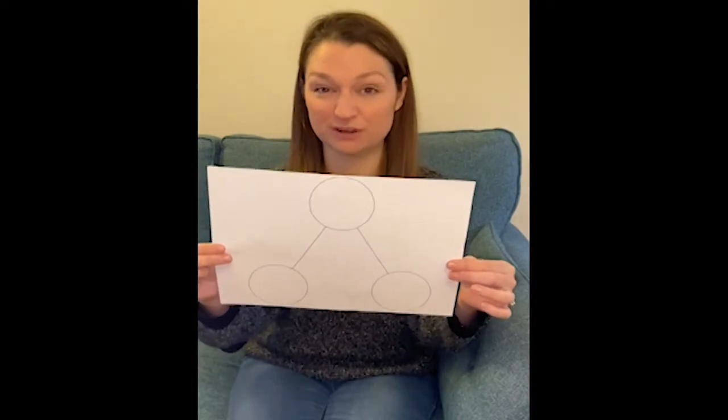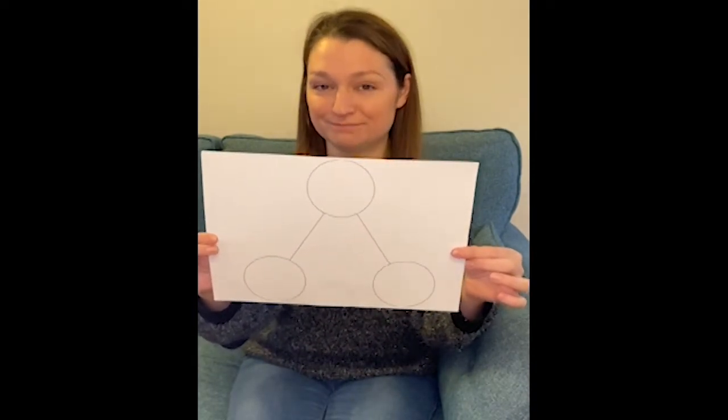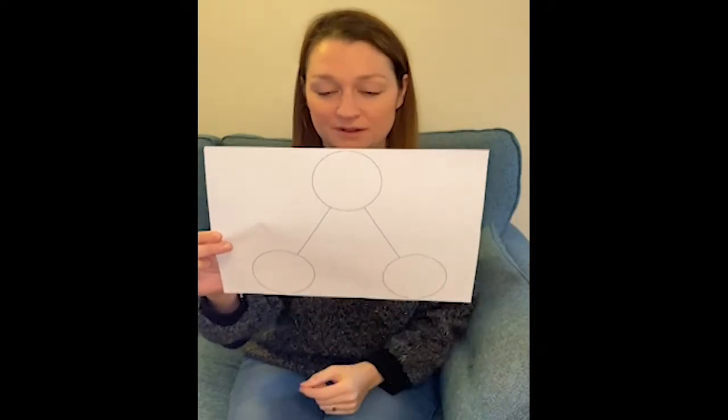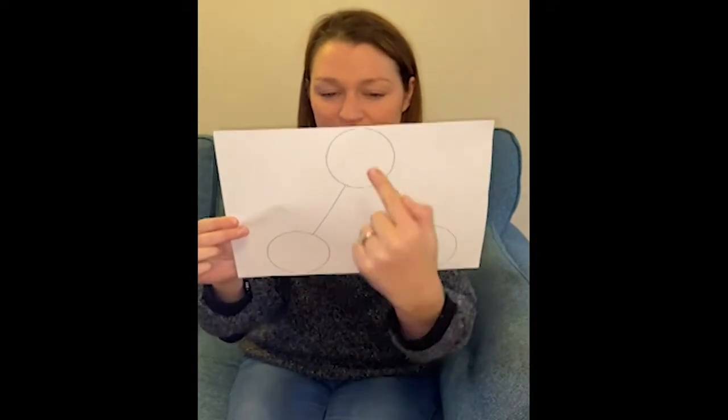Right, this is what we call a whole part model. Shall we say that together? Whole part model. Right, it's basically a drawing. Can you see which shapes are there? Yeah, you're right. You've got some circles and they're kind of in a bit of a triangular shape, really, aren't they?